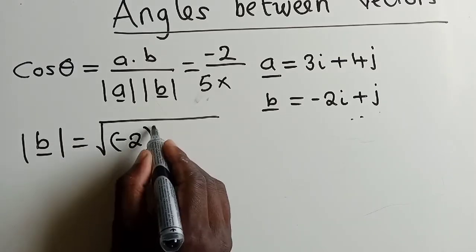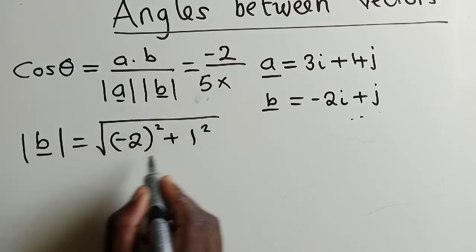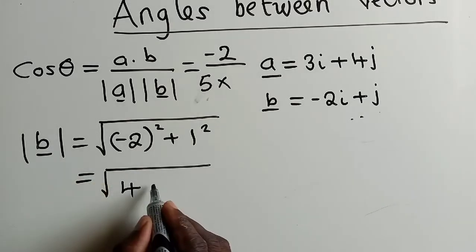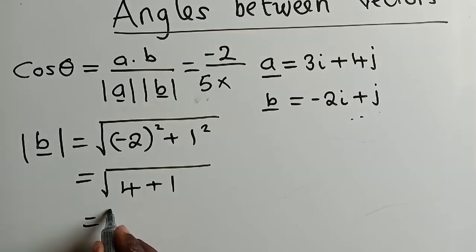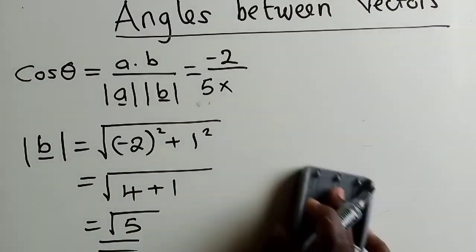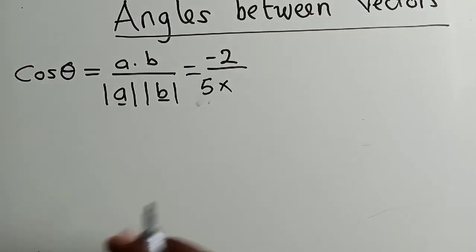We have negative 2 squared plus 1 squared. Here, we have 4 plus 1, which is equal to 5. So, we have a root of 5. Now, we can now find the angle.